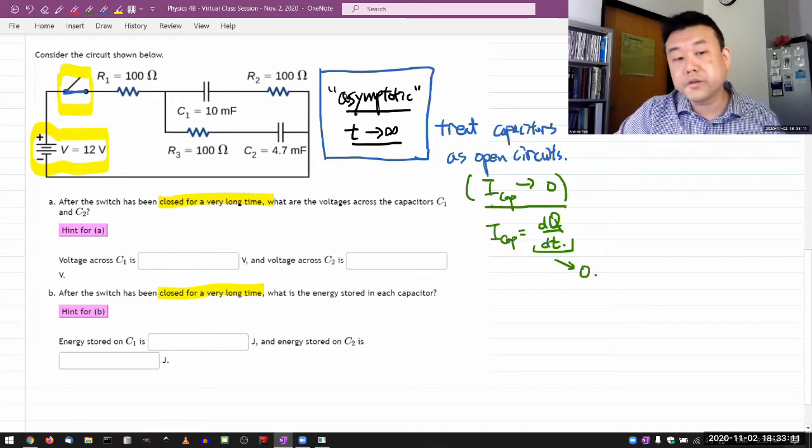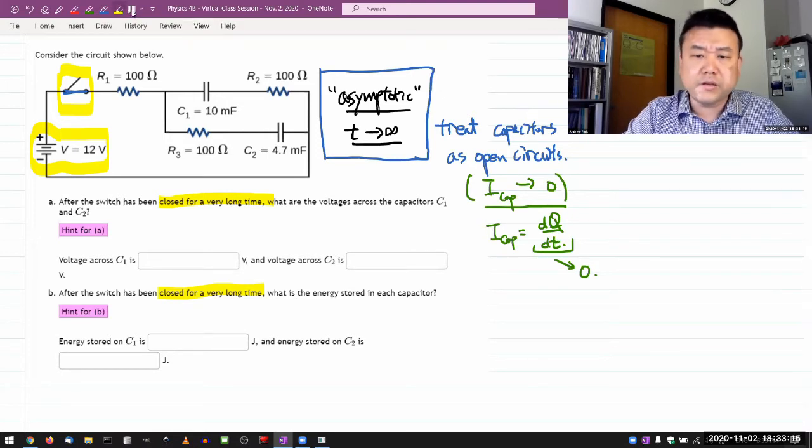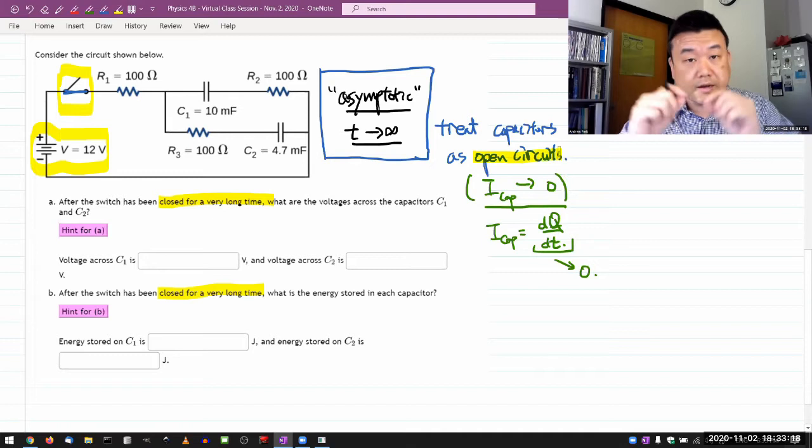That's why this is the asymptotic condition - no current is flowing through the capacitor. That's what it means to treat it as an open circuit, as in part of the circuit that's not connected, so no current is flowing through.